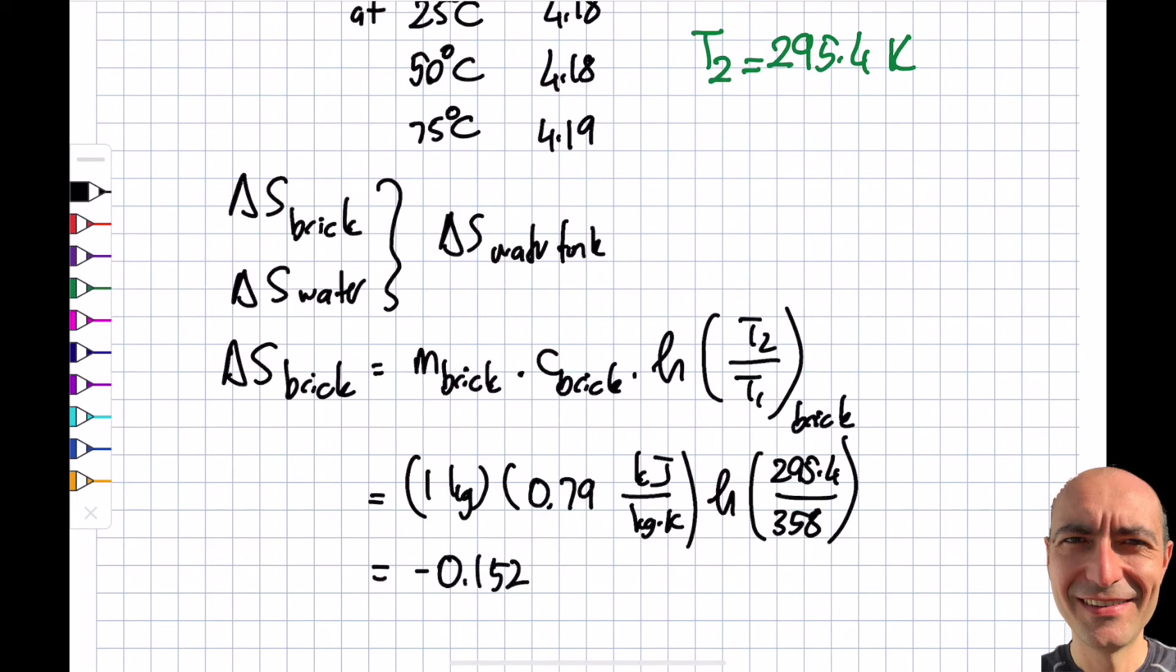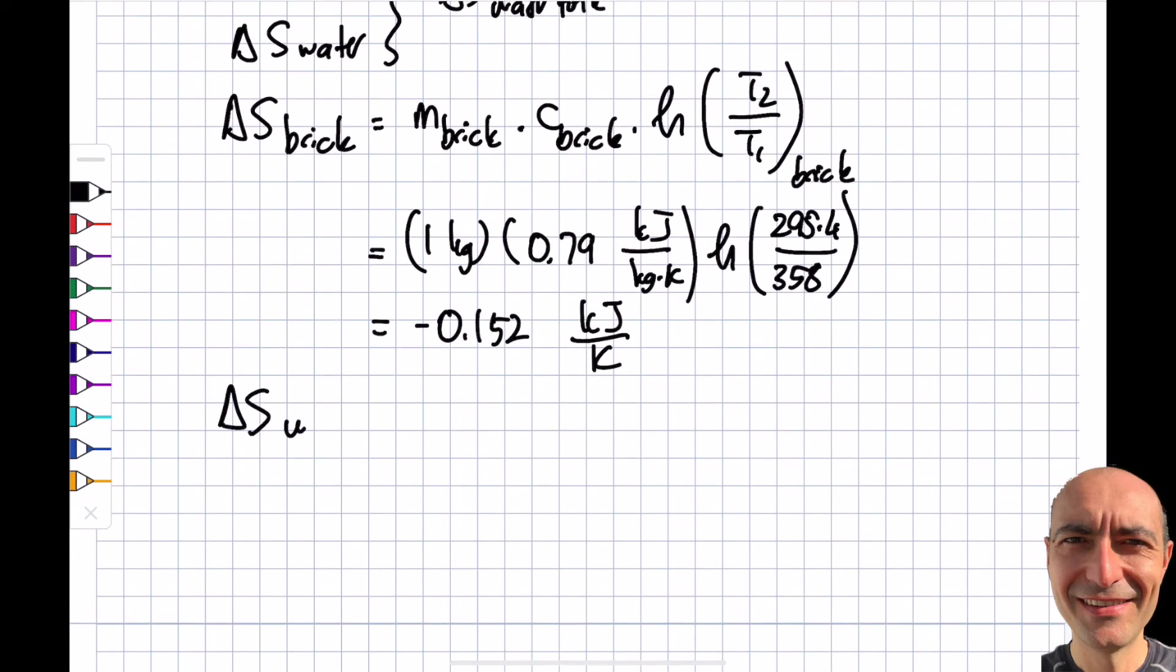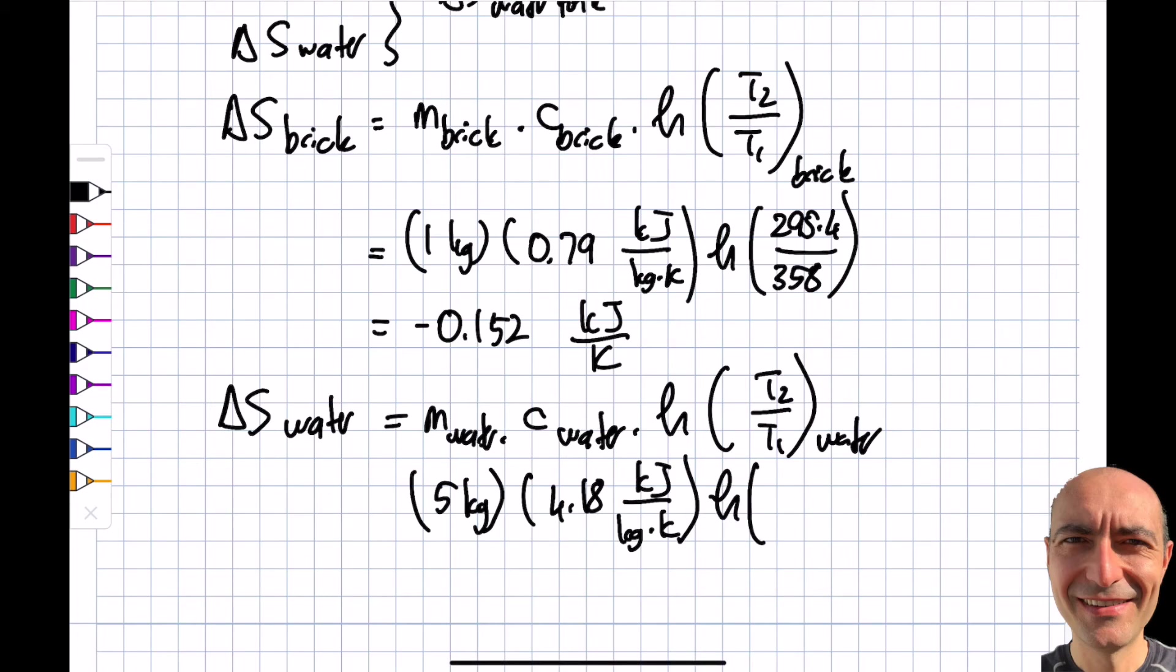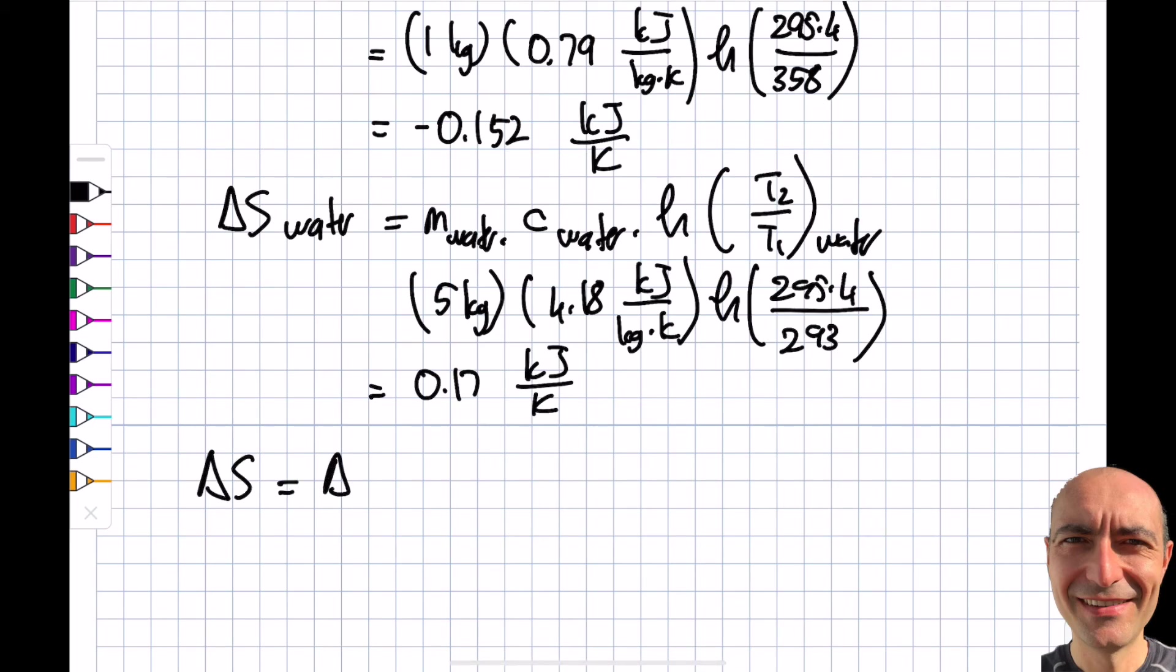Let's do the same treatment for water and sum them up. Delta S water: m water, C water, ln T2 by T1 of water. 5 kilogram, 4.18 kilojoule per kilogram kelvin, ln then 295.4 divided by 293. Again let me find this in the calculator. 0.17 kilojoule per kelvin.